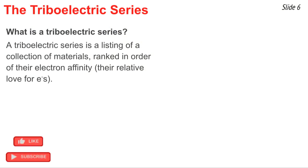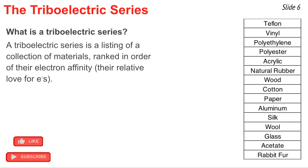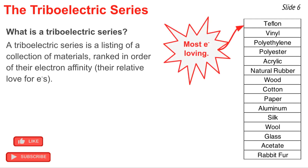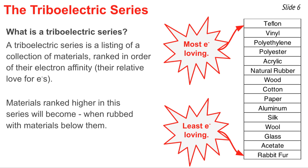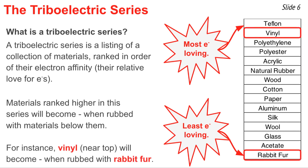By repeating this procedure for a variety of materials, you would be able to determine the relative electron affinity of all tested materials, and the result is you could create what's known as a triboelectric series. A triboelectric series is a listing of a collection of materials ranked in order of their relative affinity for electrons. This chart is a triboelectric series for 15 different materials. At the top is Teflon — it's the one that loves electrons the most — and at the bottom is rabbit fur, which has the smallest electron affinity. Materials ranked highest on this table will always become charged negatively when rubbed with materials below them. For instance, vinyl near the top would become charged negatively when rubbed with rabbit fur at the bottom, and the rabbit fur would become charged positively.